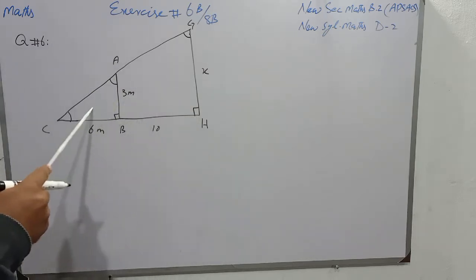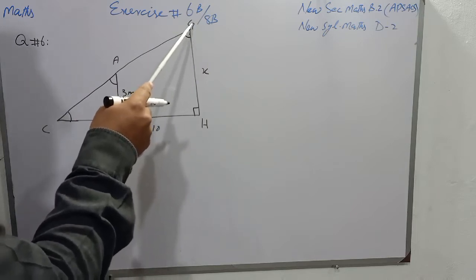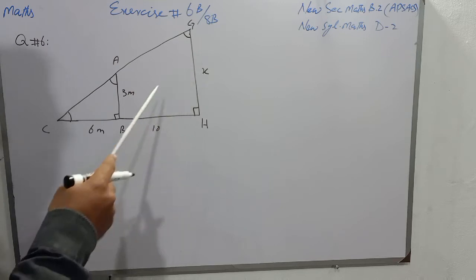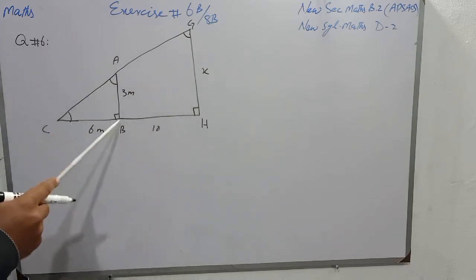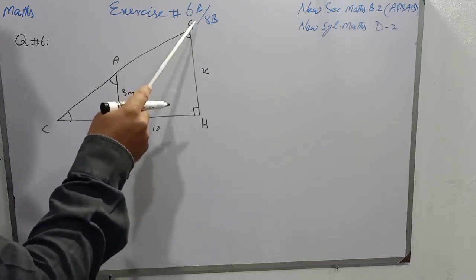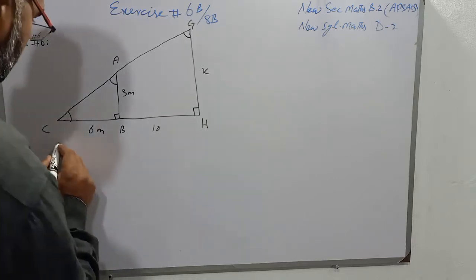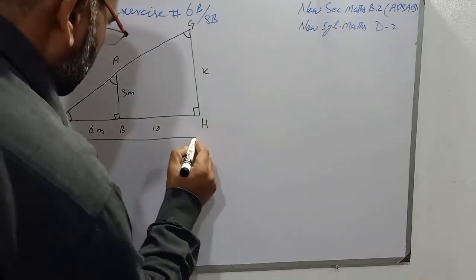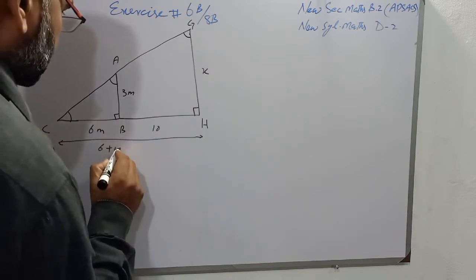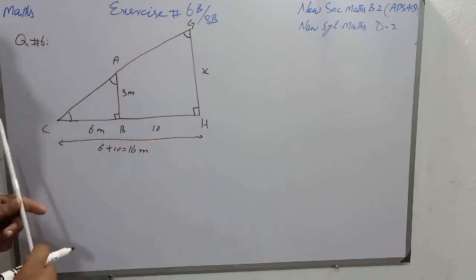These two triangles are similar, and we have to find the height of the larger triangle, that is GH, which I name as X. The base of triangle ABC is 6 meters, whereas the base of triangle GHC is 6 plus 10, which equals 16 meters.